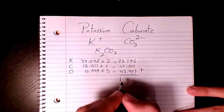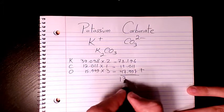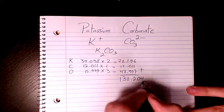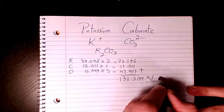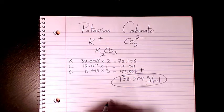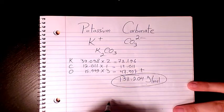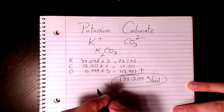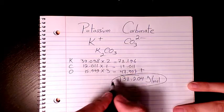That makes it 138.204 grams per mole. So that's the molar mass or molecular weight of potassium carbonate. I hope you enjoyed this video. Please leave me a comment if you have any question and I'll get back to you as soon as I can.